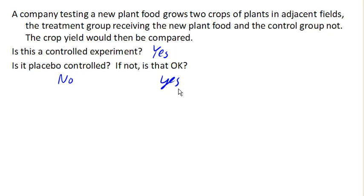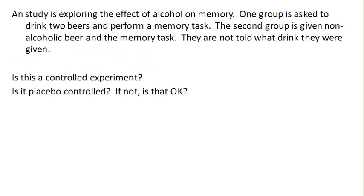So one more. Exploring the effects of alcohol on memory. One group is asked to drink two beers and perform a memory task. The second is given non-alcoholic beer in the memory task. So this is a controlled experiment. We have two groups. And this is placebo controlled because one group is given beer, the second one is non-alcoholic beer, which is going to seem very similar, so the body's gonna think that I'm drinking something. And so the non-alcoholic beer here is acting as a placebo in this experiment.